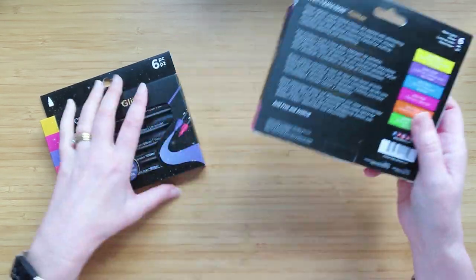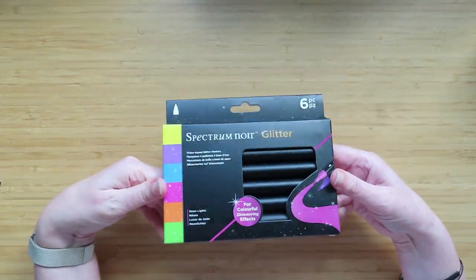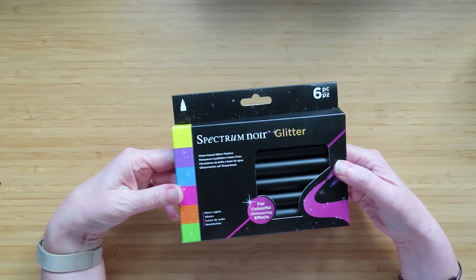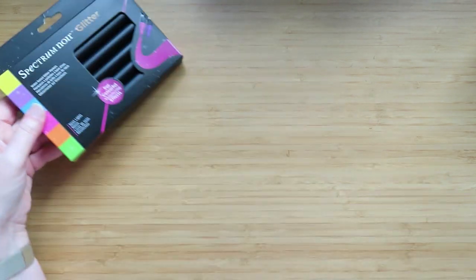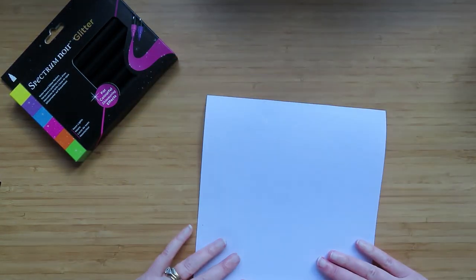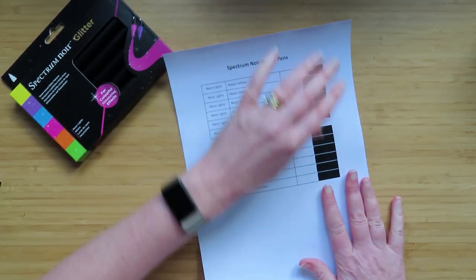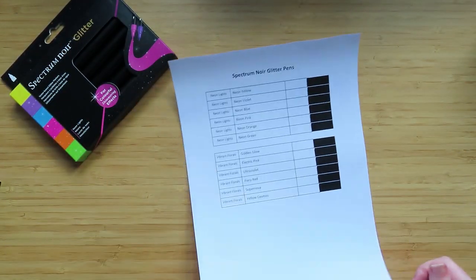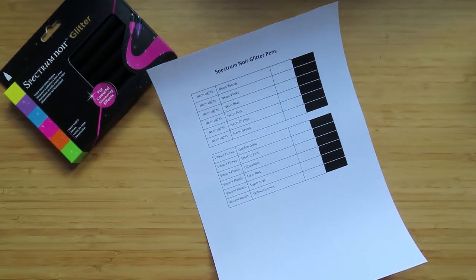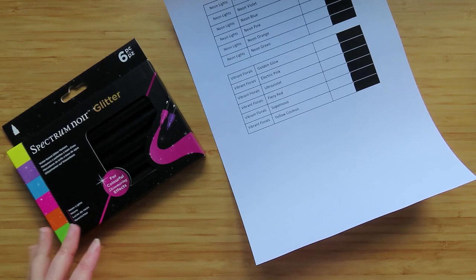There's two sets: the Neon Lights and the Vibrant Florals. I've only tried one of the pens, and that was when I was showing them in my haul. I have printed out a swatch page on my new laser printer. It's only the second thing I've printed on my new laser printer. They've come out a bit curly.